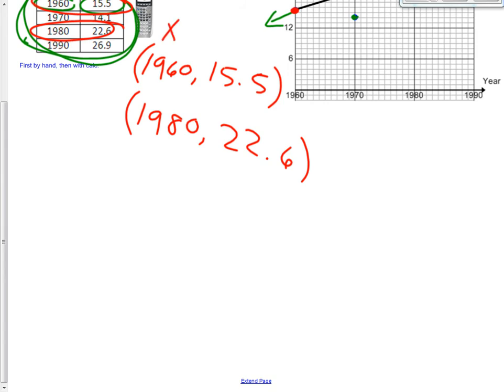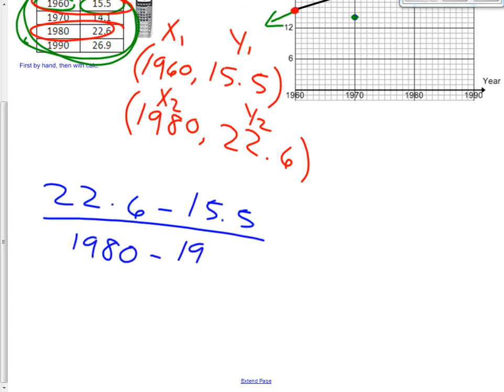Let's find the slope of these two points. So it's going to be x1, y1, x2, y2. It's the change in y, so subtract the y's, 22.6 minus 15.5 over x2 minus x1, which is 1980 minus 1960. Finding the slope, we got ourselves 7.1 over 20.